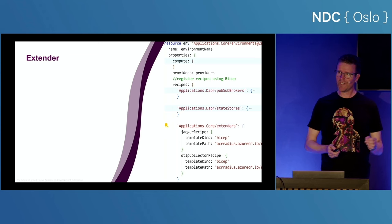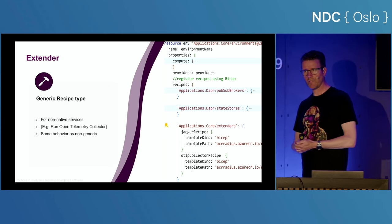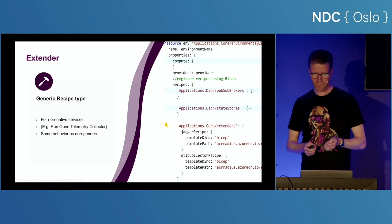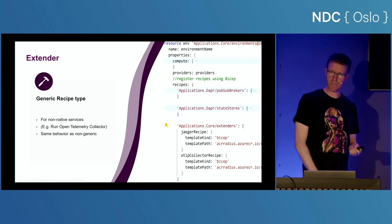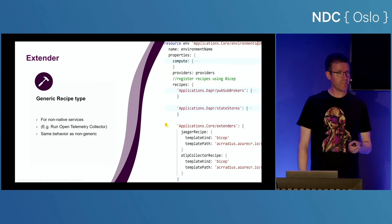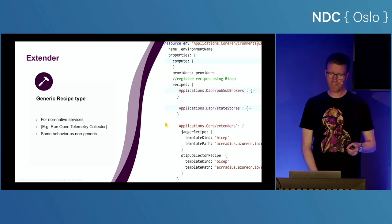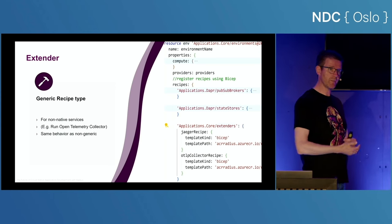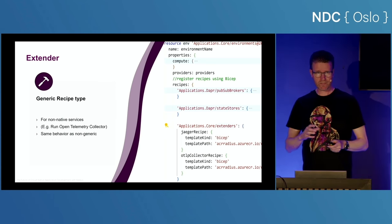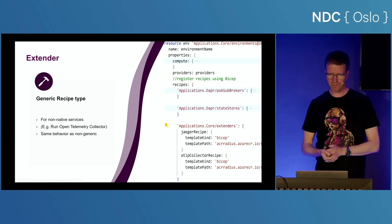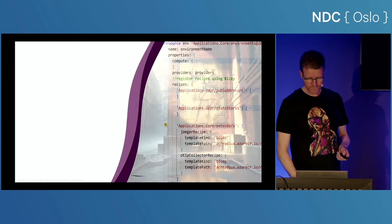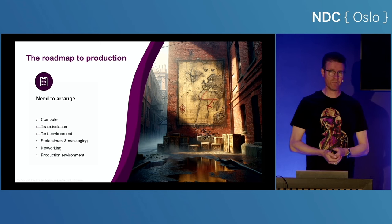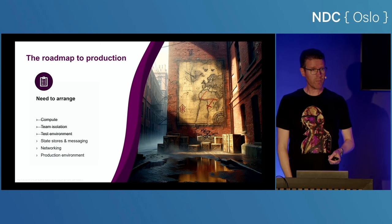For scenarios where you don't know the actual type of resource you want to deploy because Radius doesn't have that type yet, but you still want to run that service in your application, extenders come in. For example, Radius doesn't have proper OpenTelemetry support yet. I want observability in my production app, so I'm using an extender to run Jaeger in test environments and forward OpenTelemetry to Application Insights when in the cloud. Extenders are a really nice tool to deal with stuff not yet supported natively by Radius.